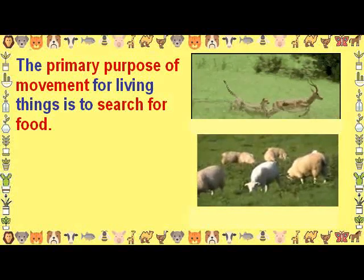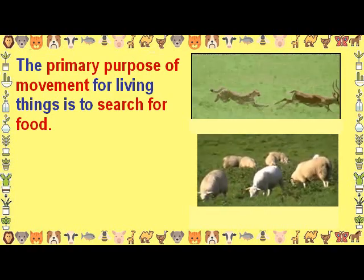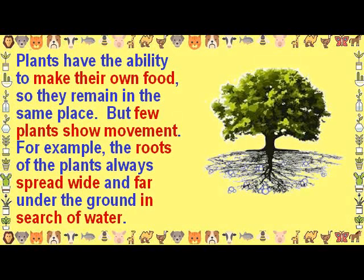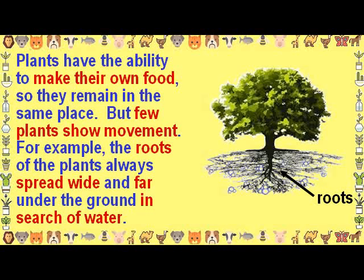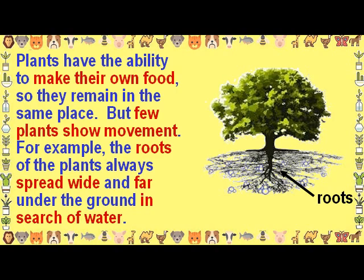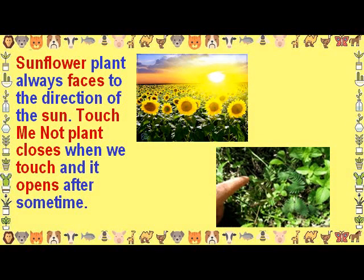The primary purpose of movement for living things is to search for food. Plants have the ability to make their own food, so they remain in the same place. But a few plants do show movement. For example, the roots of plants spread wide and far under the ground in search of water. The sunflower plant always faces the direction of the sun. The touch-me-not plant closes when we touch it and opens after some time.